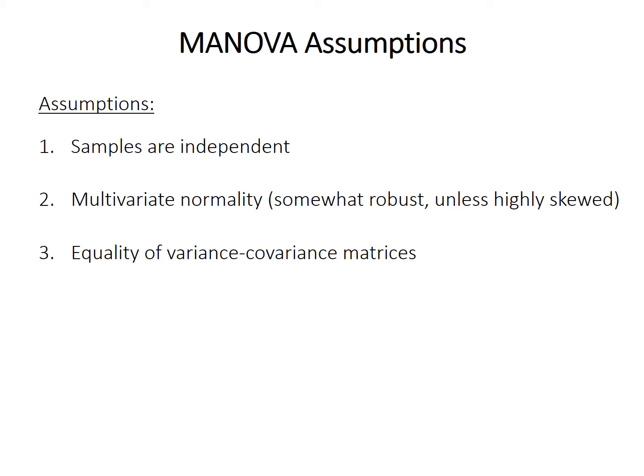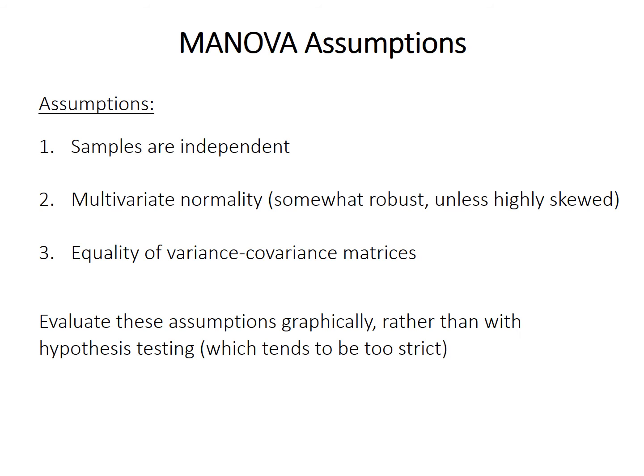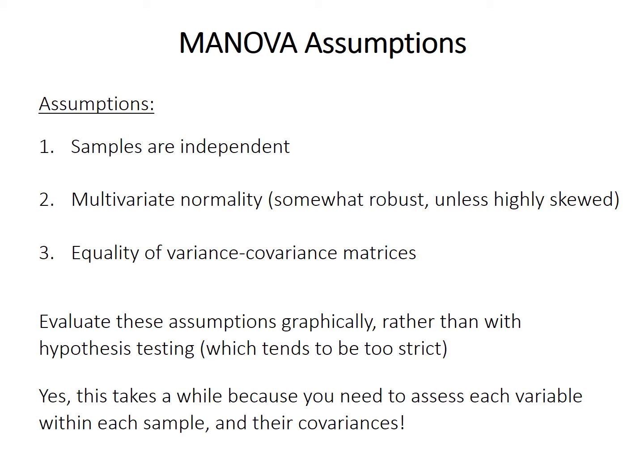The samples must also have equal variance-covariance matrices — often referred to as homogeneity of variance-covariance matrices. There's a lot to assess, especially with many samples and variables, but the best approach is to assess them graphically. You can formally test for multivariate normality, equality of variance, and variance-covariance matrix equality, but those tests are too strict for evaluating assumptions. It will take a while since you need to examine each variable within each sample as well as the covariances, making many graphs and histograms.